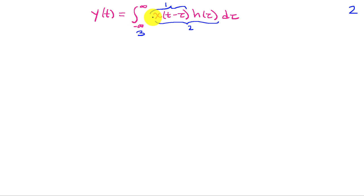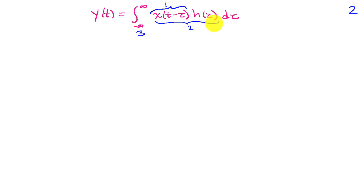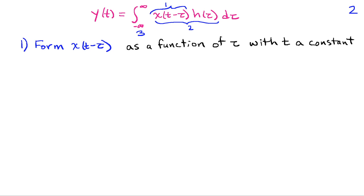First, we're going to evaluate x(t − τ) · h(τ) as a function of the independent variable τ. Then we're going to evaluate the product x(t − τ) · h(τ). And then last, we'll evaluate the integral, or the area under that product.